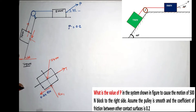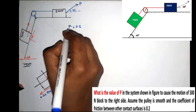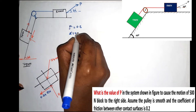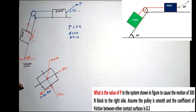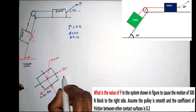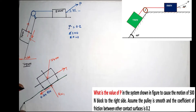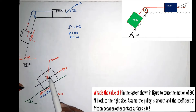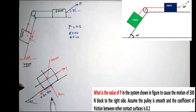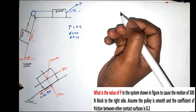We have marked all forces on the free body diagram. Now we apply the equilibrium equations: sigma V equals 0 and sigma H equals 0. Since this is an inclined plane at 60 degrees, we resolve forces parallel and perpendicular to the inclined plane.